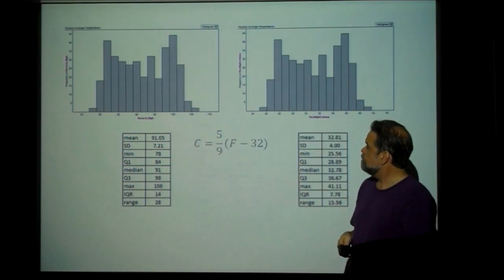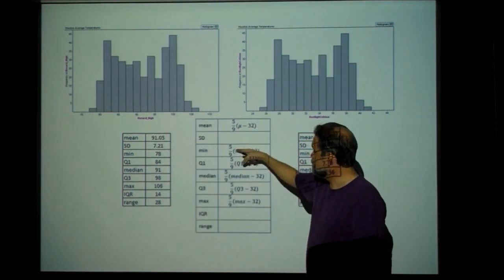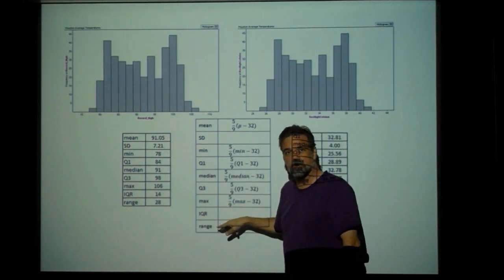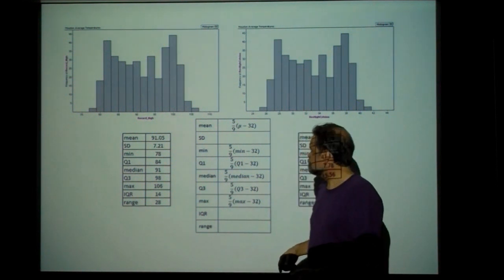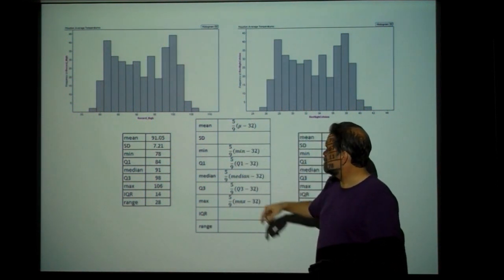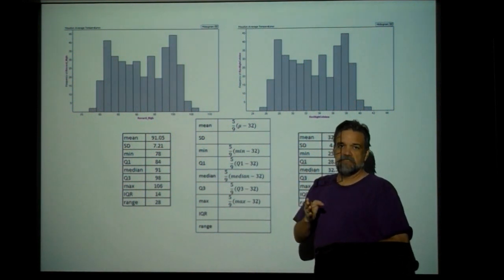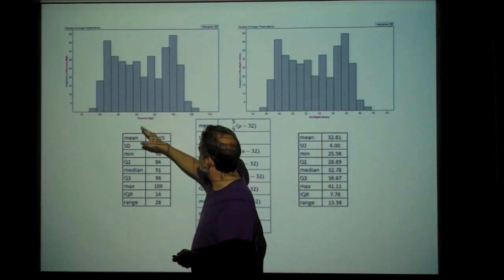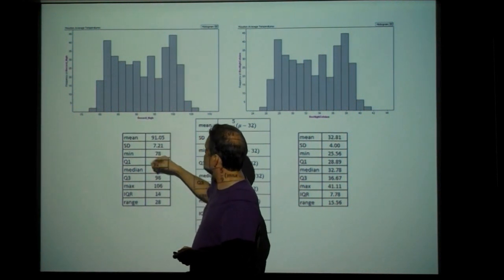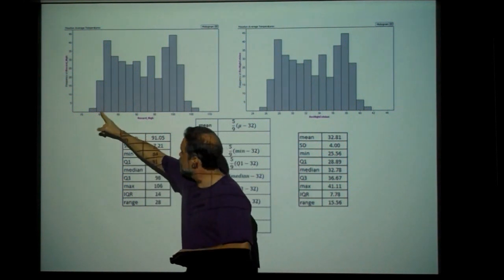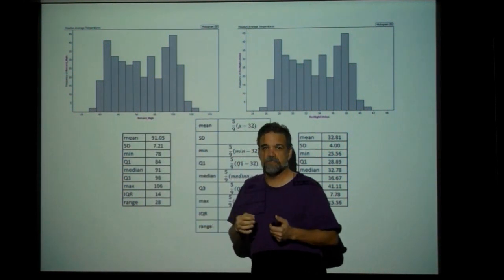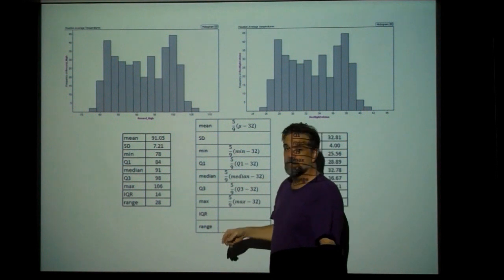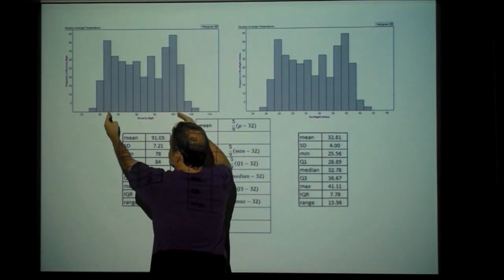Which ones can you apply the function to? It works for the mean, the minimum, Q1, median, Q3, and maximum — but not the standard deviation, not the IQR, and not the range. Why? The mean and the five-point summary are measurements of position. I can look on my x-axis and point to where the mean is, where the median is. I can't point to the standard deviation. The standard deviation is a measurement of spread — same with the IQR and the range. Those are all measurements of how spread out the data are.